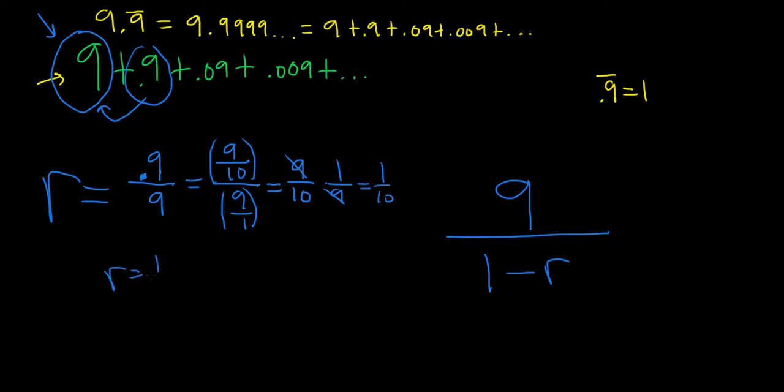So our r is equal to 1 tenth, and that's less than 1, so the series does converge. However, in the original question, which I didn't write down, we were told it was convergent. But if you didn't know, you would have to look at this. So because r is less than 1, this will converge by the geometric series test.